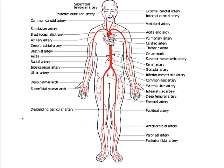Here are some of the major arteries found in your body — you don't need to learn all of them, but you can see they reach all different parts of the body. Places where you can check pulses include your wrists and your neck, because as your heart pumps blood out, you can feel that pumping in these different arteries throughout your body.